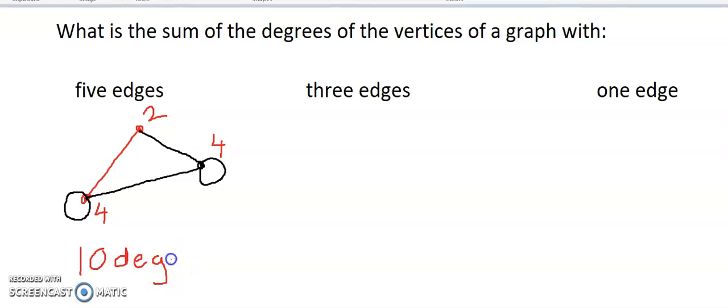So far, it looks like that if I've got 5 edges, if I double the amount of edges, I'll get the amount of degrees. Let's see if that is correct with the following. It says I've got 3 edges. So I'm going to put some vertices. I've got 1 edge, 2 edges, and 3 edges.